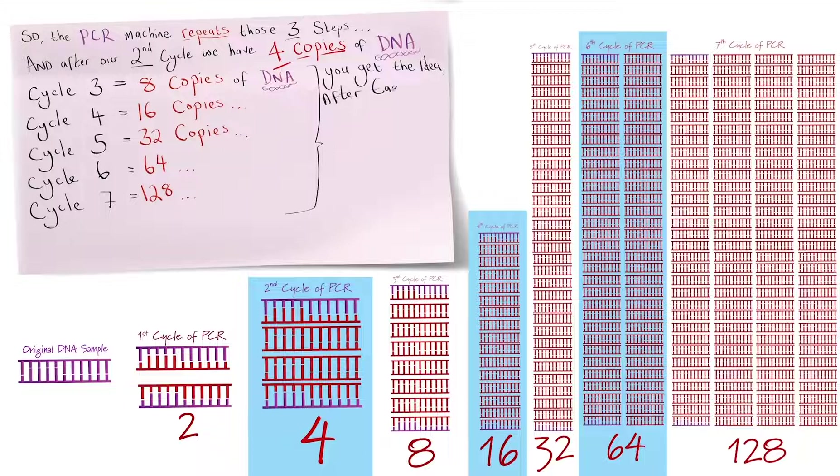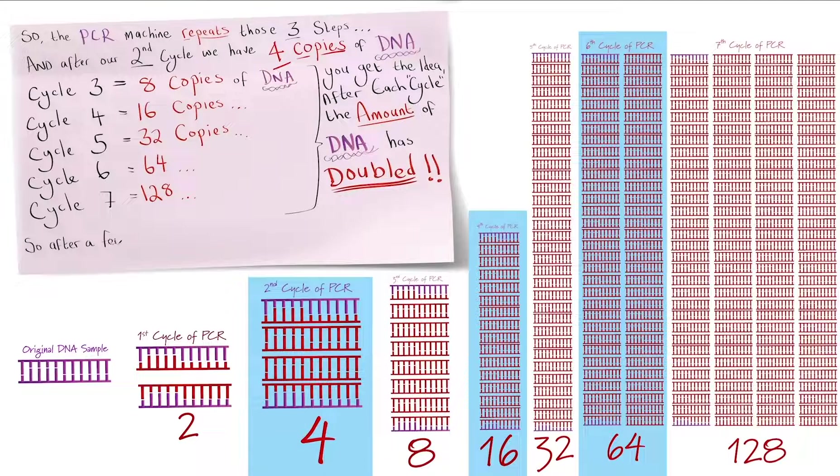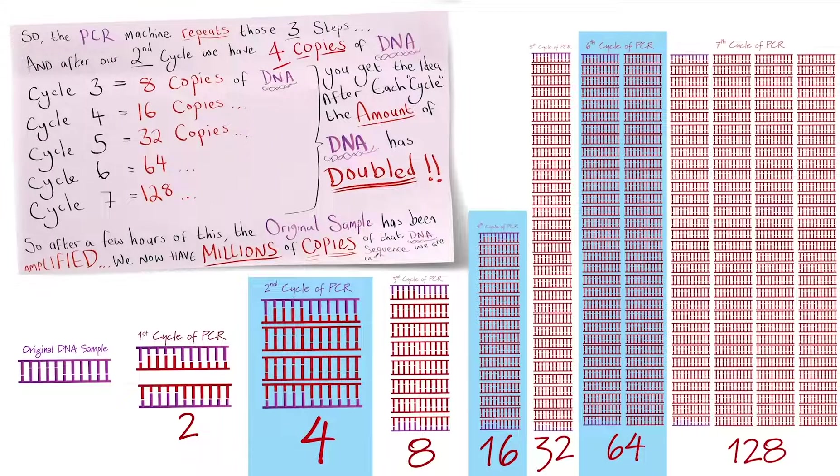And after each cycle the amount of DNA has doubled. So after a few hours of this our original sample has been amplified. We now have millions of copies of that DNA sequence we are interested in.